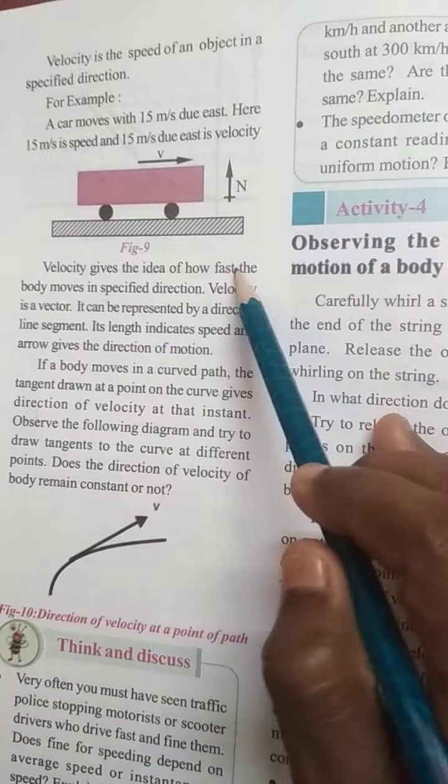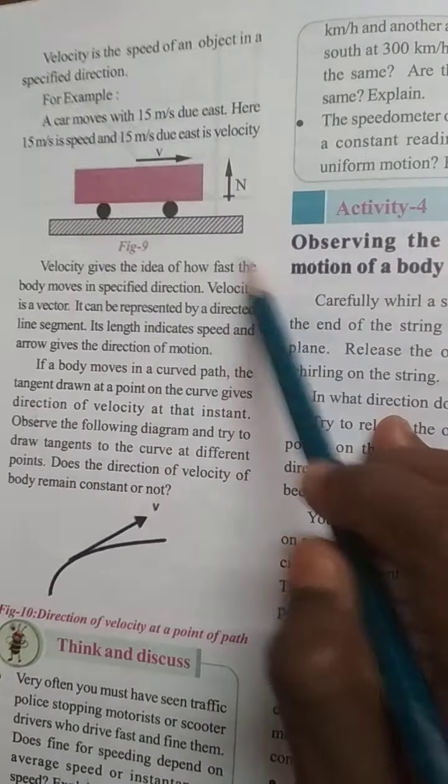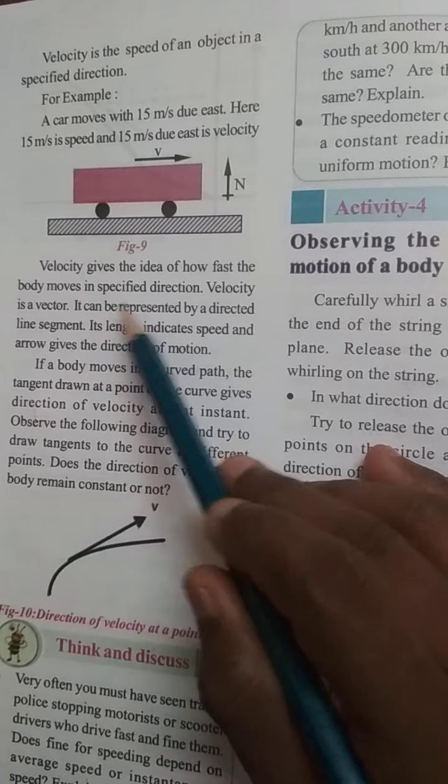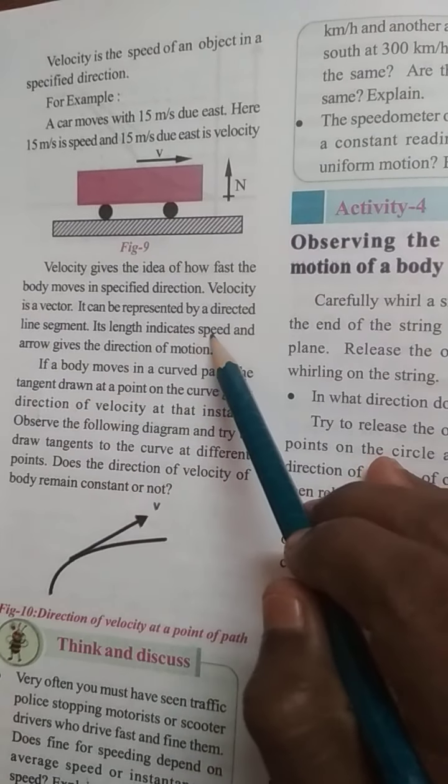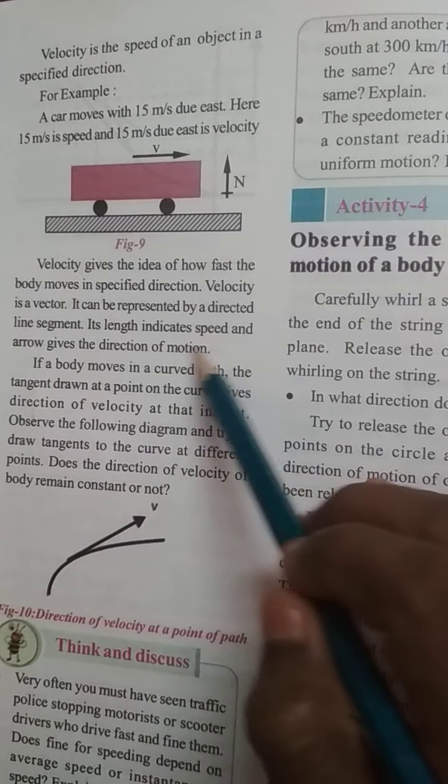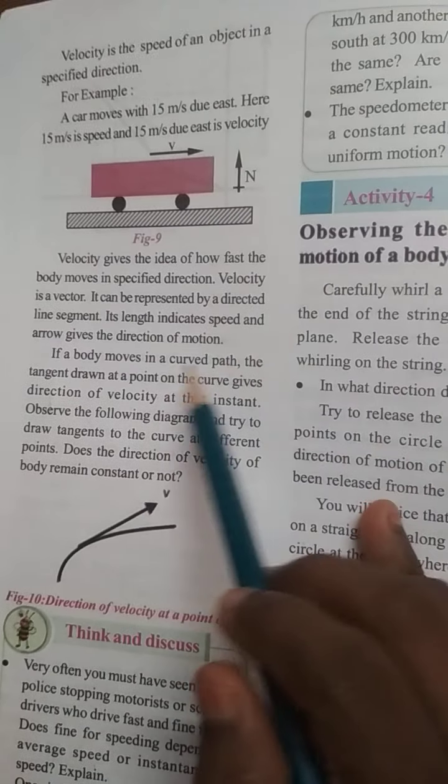Velocity gives the idea of how fast the body moves in a specified direction. Velocity is a vector. It can be represented by a directed line segment. Its length indicates speed. An arrow indicates the direction of motion.